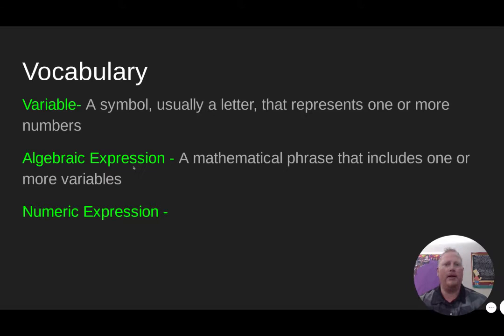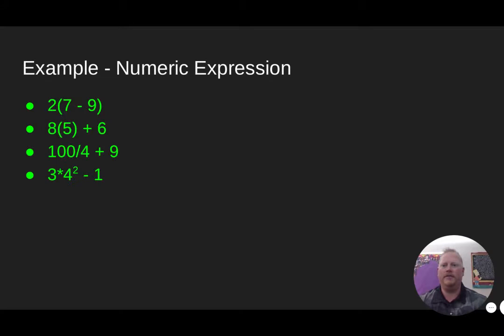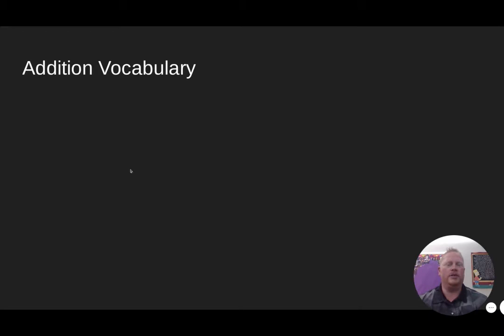A numeric expression is a mathematical phrase involving numbers and operation symbols but no variables. As soon as you see a variable you know it's algebraic; if there's no letter, it's numeric. These examples you may have seen before — they involve order of operations — but they're all numbers and operation symbols with no letters, so those are numeric expressions.